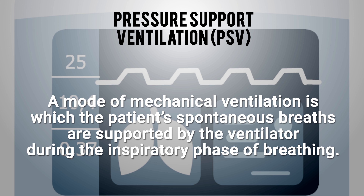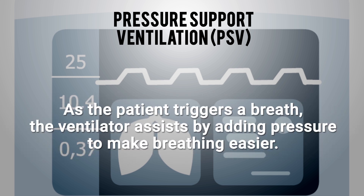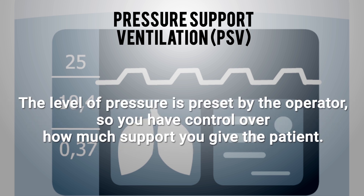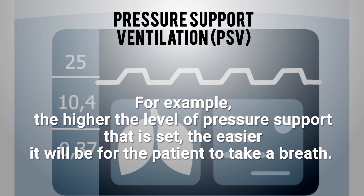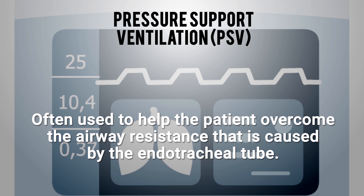PSV, or Pressure Support Ventilation, is a mode in which the patient's spontaneous breaths are supported by the ventilator during the inspiratory phase. As the patient triggers a breath, the ventilator assists by adding pressure to make breathing easier. The level of pressure is preset by the operator — the higher the pressure support set, the easier it is for the patient to breathe. In PSV, breaths are time-cycled and pressure-limited. Pressure support is often used to help the patient overcome airway resistance caused by the endotracheal tube.